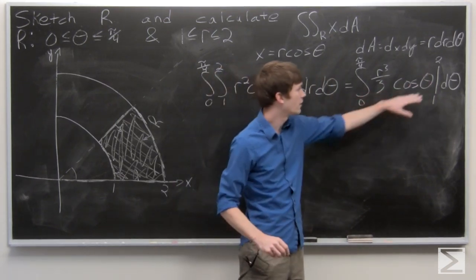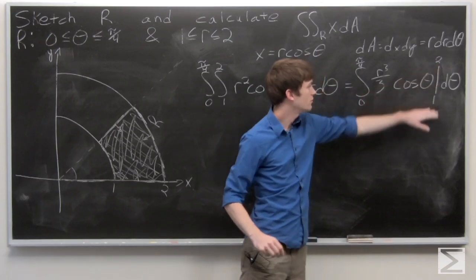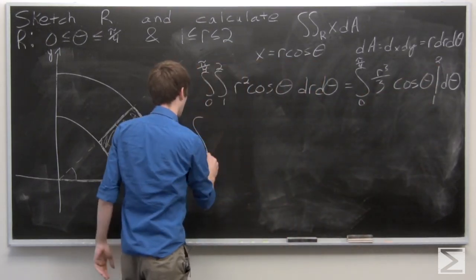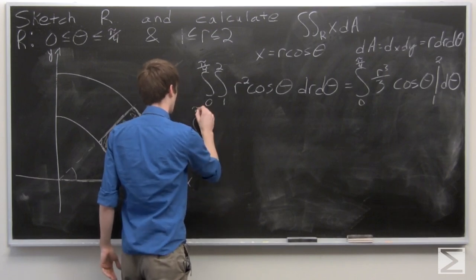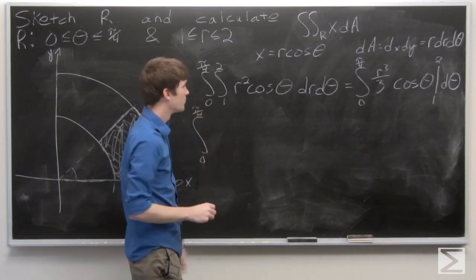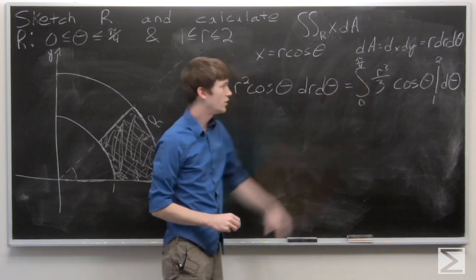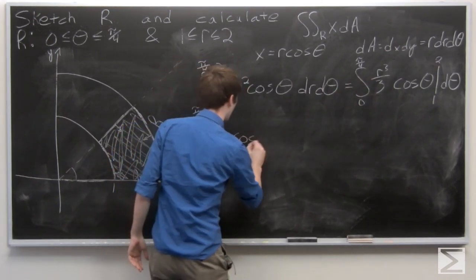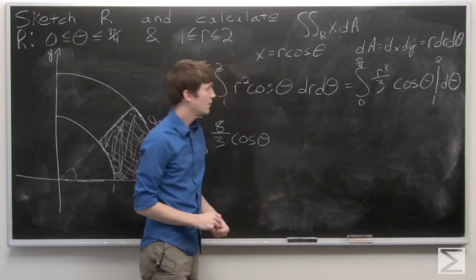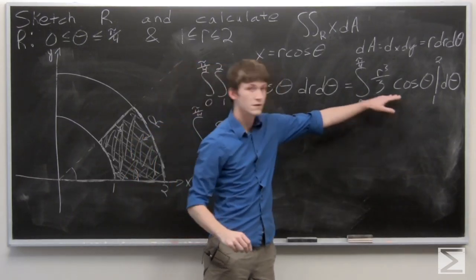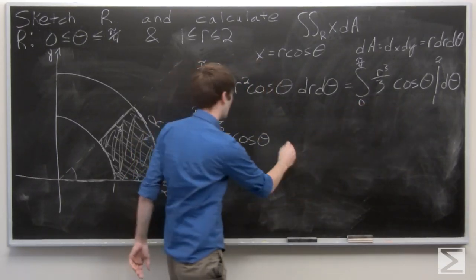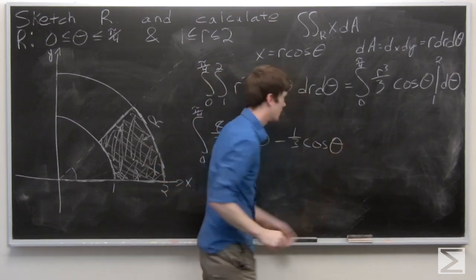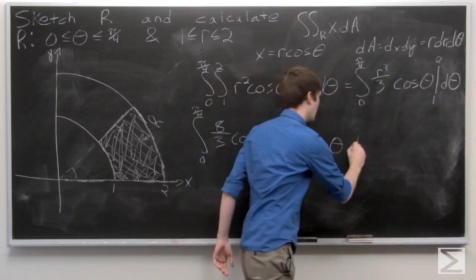So we can evaluate when R is equal to 2 minus R is equal to 1. So we get 2 cubed is 8, 8 over 3 cosine theta, minus 1 cubed is 1 over 3 cosine theta.